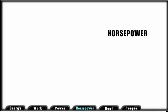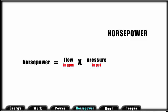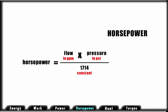Mathematically, hydraulic horsepower is expressed as follows. Horsepower equals flow in gallons per minute times pressure in pounds per square inch divided by 1,714, a constant.